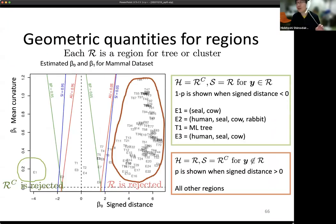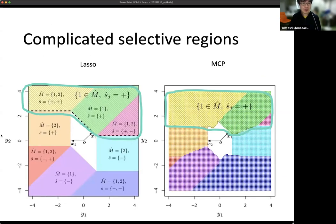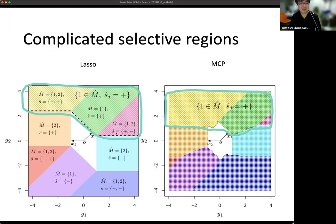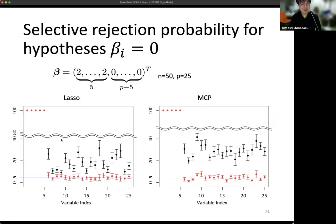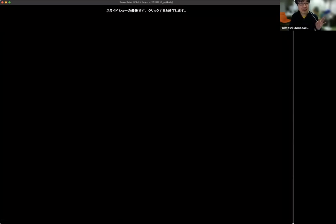This is also an example for LASSO. There are more complicated versions of LASSO where we cannot define the selective regions explicitly, and we only have the result from computation. But our method is very general — even for complicated selective regions, we just count how many times we observe the result by simulation. We can compute p-values and confidence intervals not only for LASSO but for complicated variants as well.